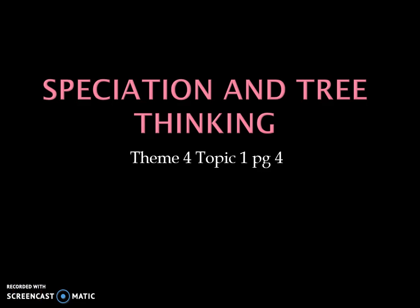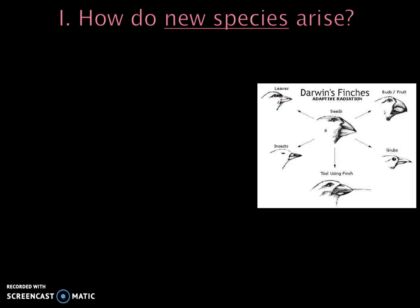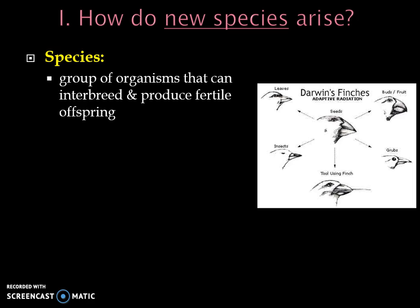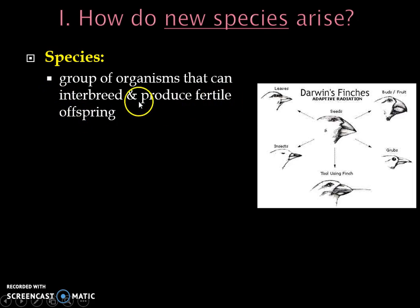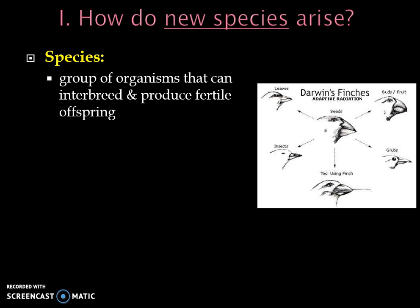Hello, biology students. Today we're going to be talking about speciation and tree thinking. So how do new species arise or form? Well, first we have to define what a species is. It's a group of organisms that can interbreed and produce fertile offspring — they can make babies, and those babies themselves can also make babies. We'll talk more about that in class and why some examples might or might not qualify as a species.